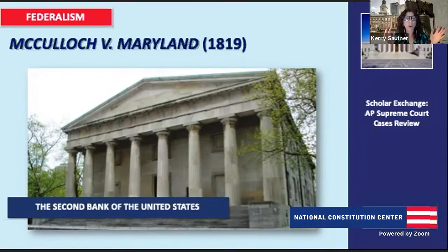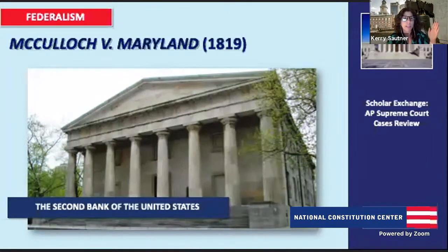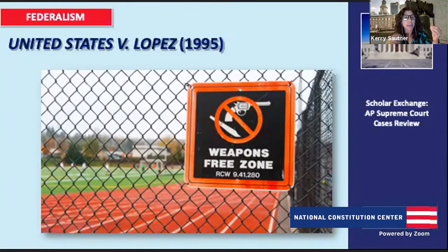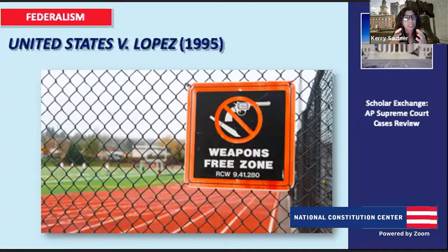McCulloch opens the door for a broad reading of congressional powers and the supremacy of federal law over state law. Now we swing to the other side with United States v. Lopez, many years later. How are these two cases connected, and why did they pick these two cases together to understand federalism?